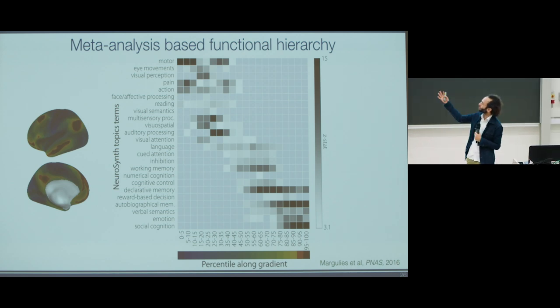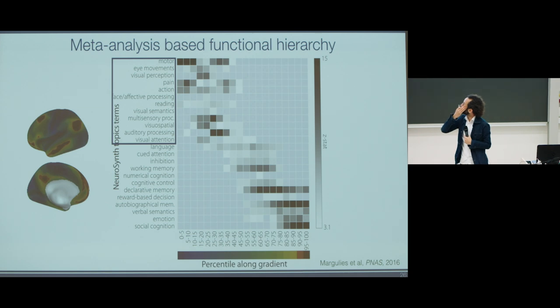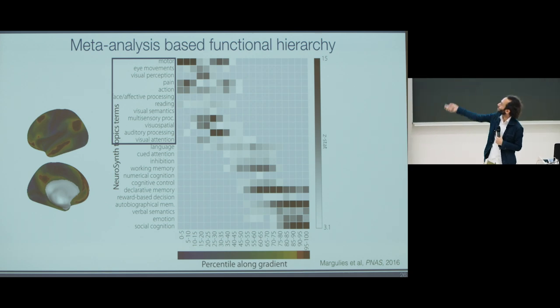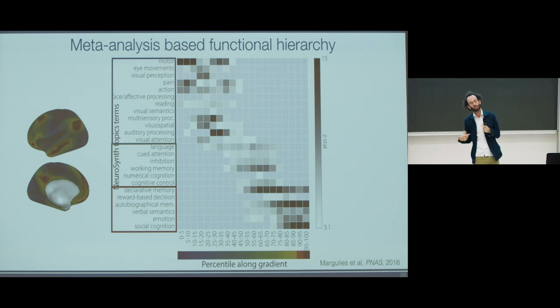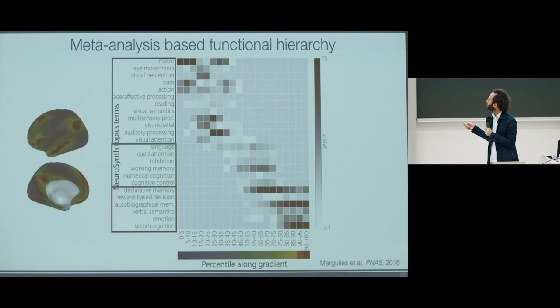This is a meta-analysis where we looked at the distribution of functions along the principal gradient. As you might expect, at one end we see motor sensory processing, followed by domain general, and then all of these memory-driven higher-order integration abstract processes at the opposite end. This is simply a caricature, but it does suggest this progression that was initially described by Mesulam when he proposed this theory of integration from sensory input towards output, or a sensory-fugal pattern of organization.